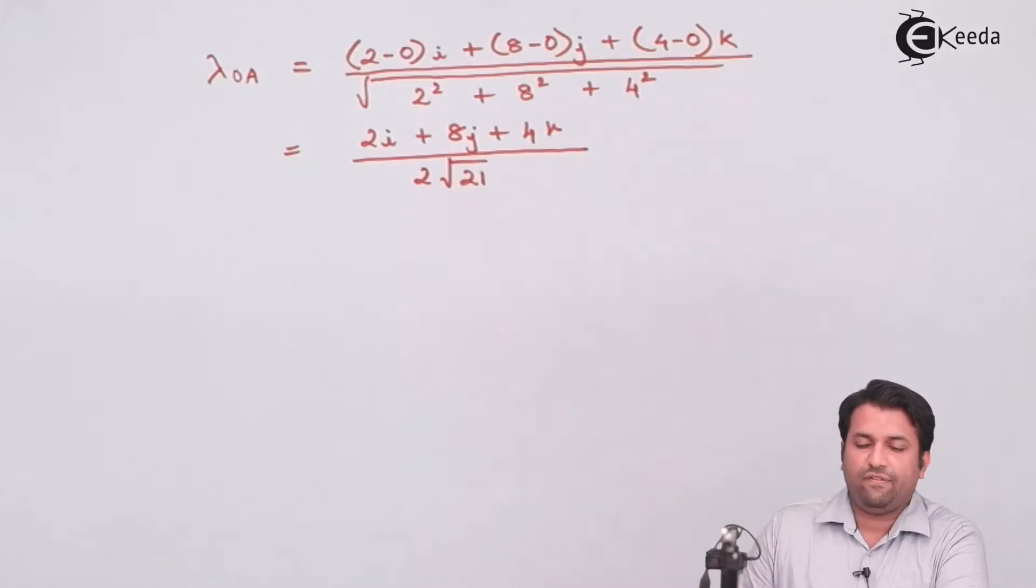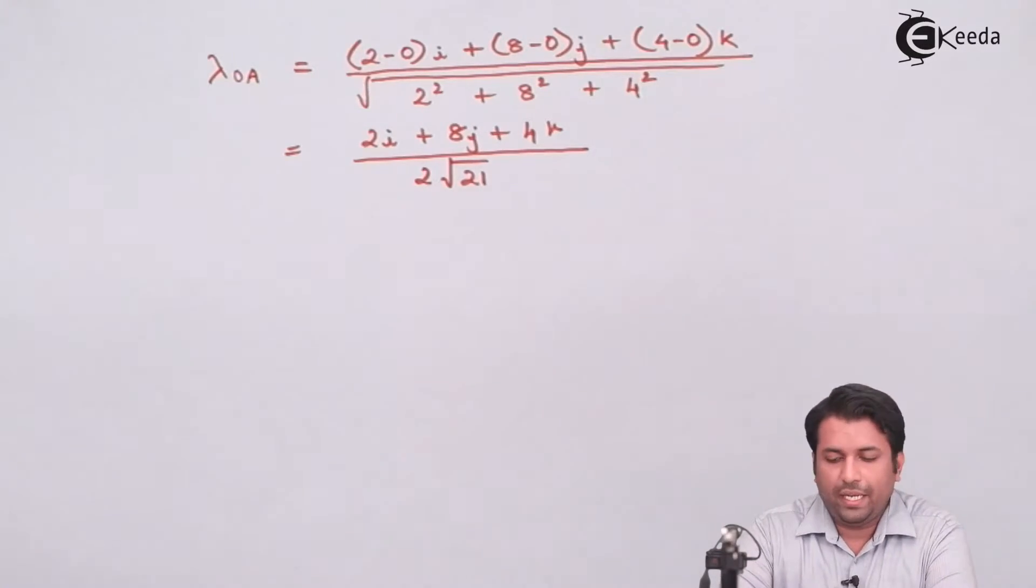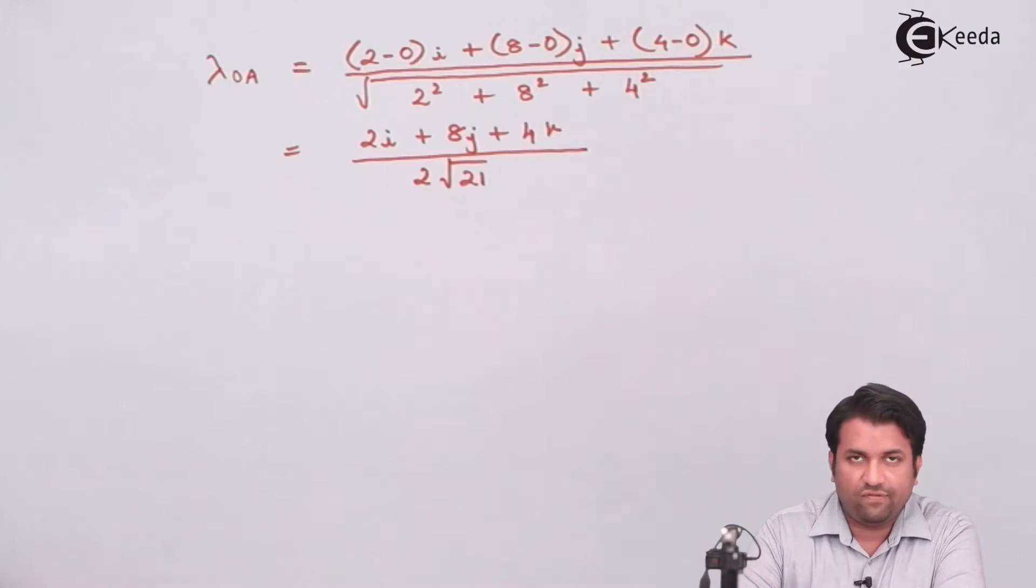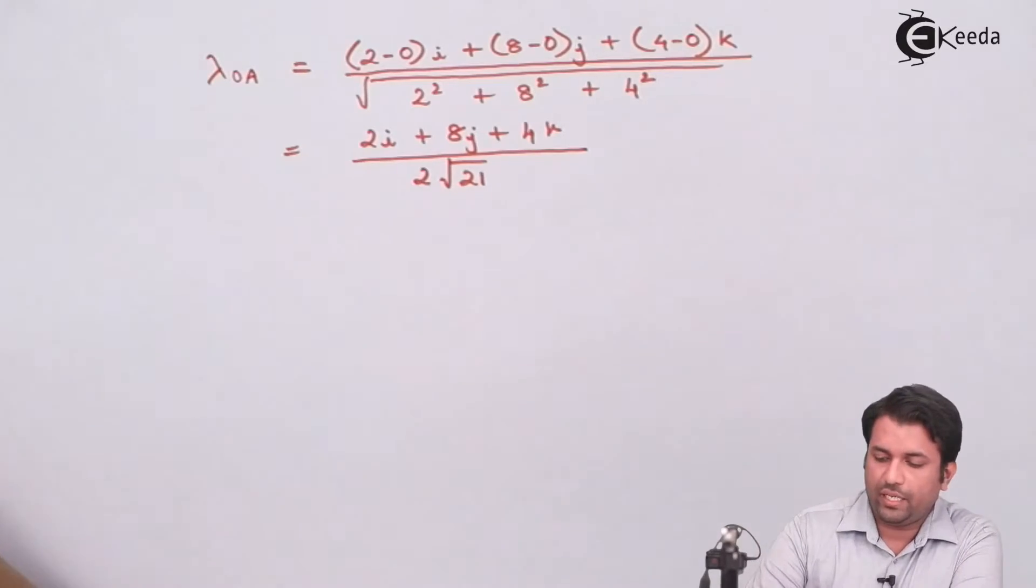Now I know the unit vector along OA is this. So to find out the force vector, I need to take the dot product of the magnitude and the unit vector.